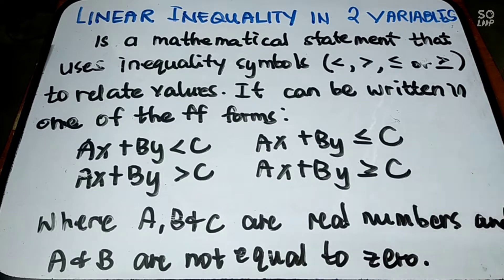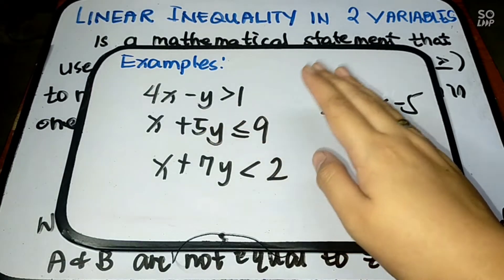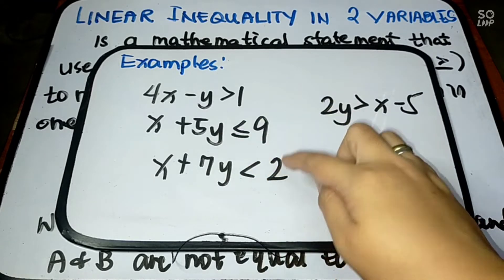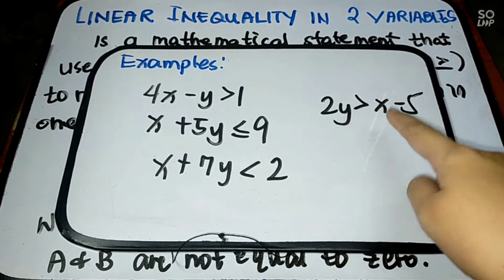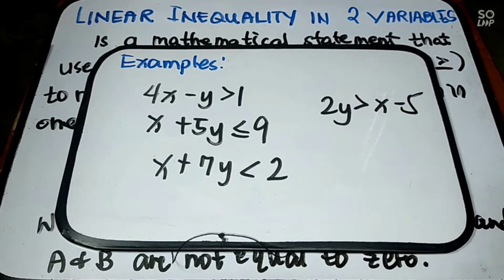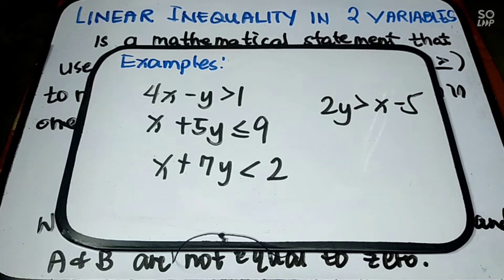So, let us have an example. Here are some examples of linear inequality in two variables: 4x minus y greater than 1, x plus 5y less than or equal to 9, x plus 7y less than 2, and 2y greater than x minus 5. As you can see, our examples use greater than, less than, less than or equal, or greater than or equal symbols. So, whenever you see those symbols and two variables x and y, that is a linear inequality.